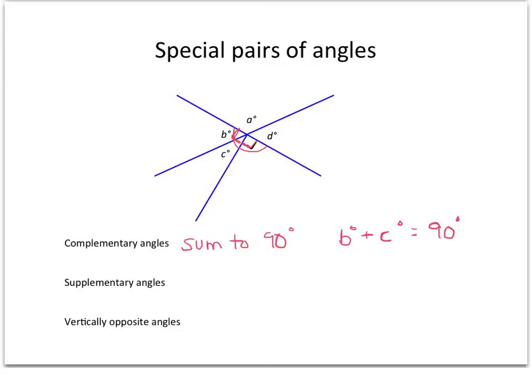Second type of angle we're going to look at are supplementary angles. So supplementary angles sum to 180 degrees. And again see if you can find a pair of supplementary angles in that diagram. Hopefully you've seen there's two pairs you could have had. So A and B are supplementary because they're on a line, they're 180 degrees. Or A and D, those are also supplementary, they're also on a line.